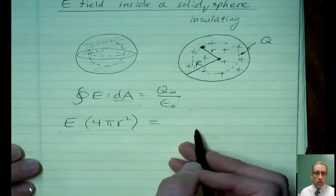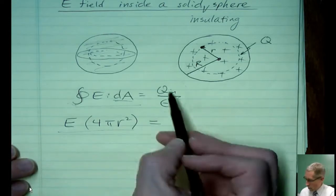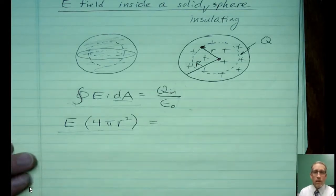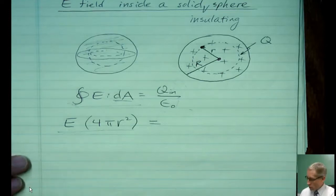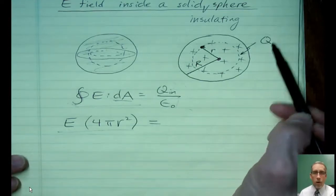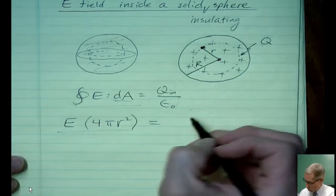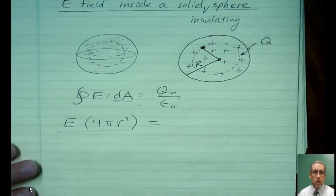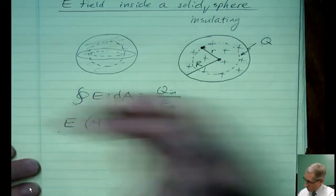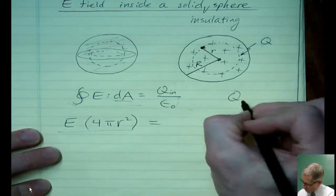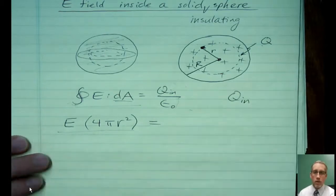Now, here's actually the hardest part of this problem. It's over here figuring out how much charge we have inside our Gaussian shape. It's important to notice that we don't have all of the charge. I cannot just write Q for my charge that's inside. So over here, I'm going to do a calculation for how much charge is inside.